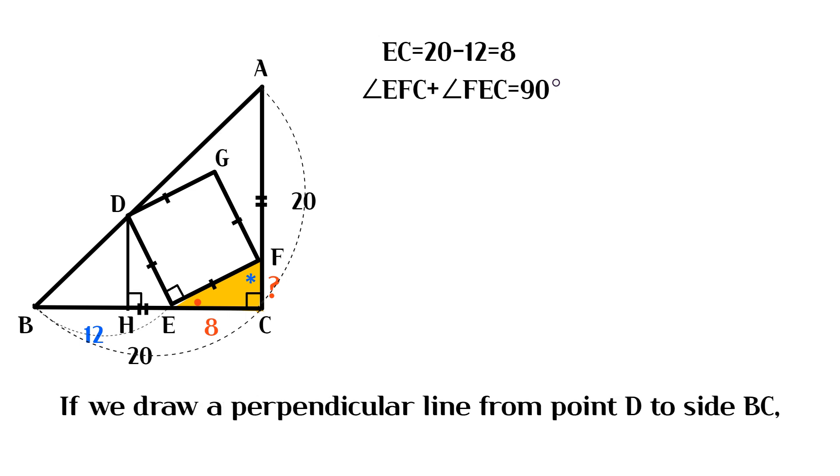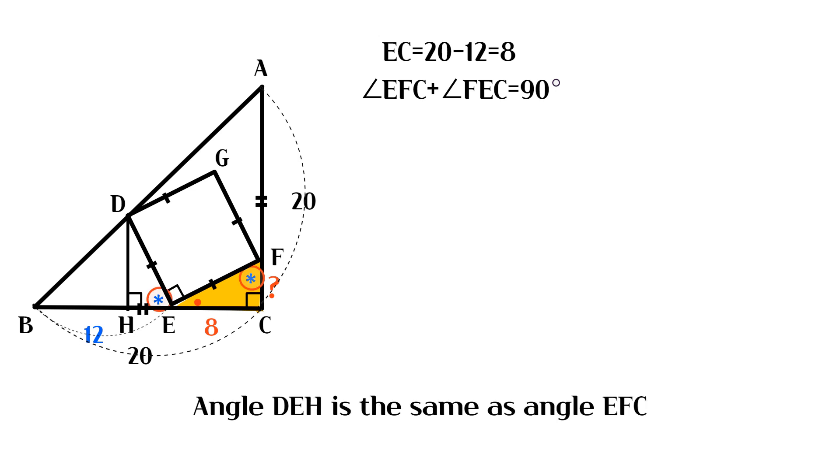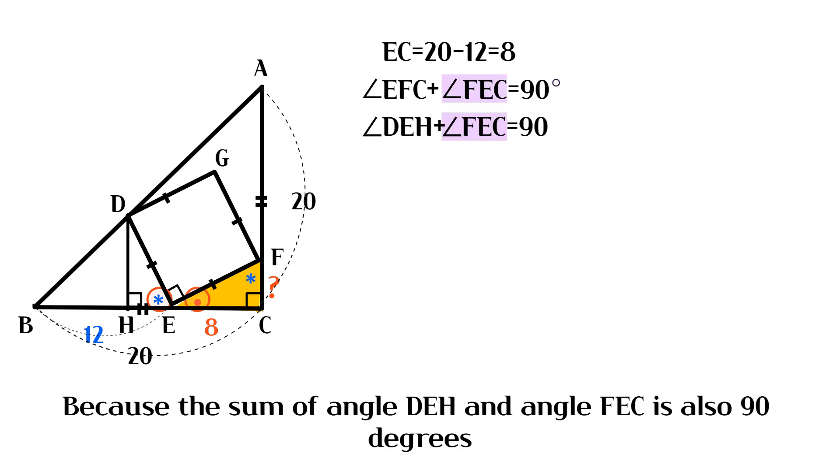If we draw a perpendicular line from point D to side BC, angle DEH is the same as angle EFC, because the sum of angle DEH and angle FEC is also 90 degrees.